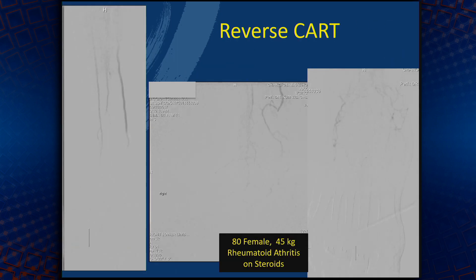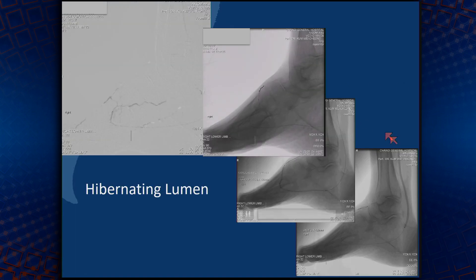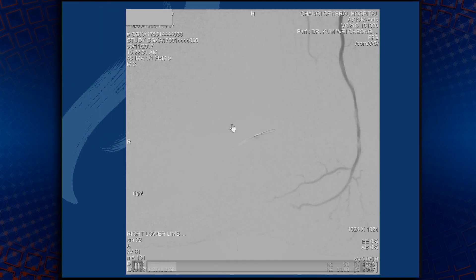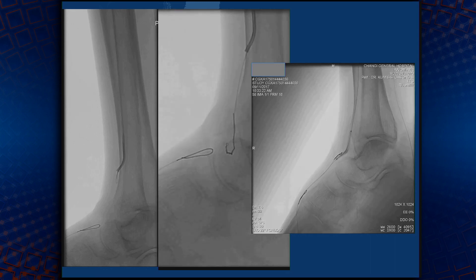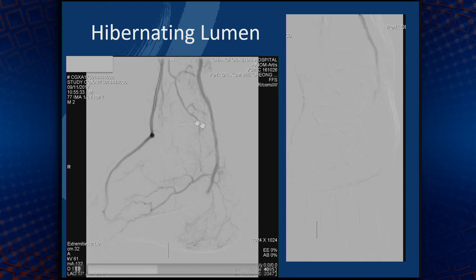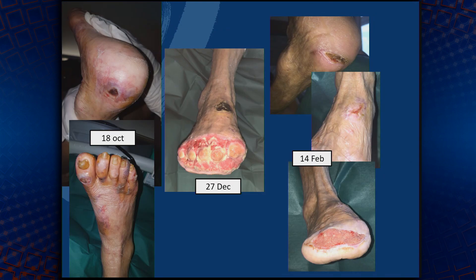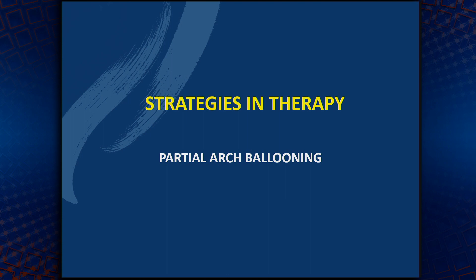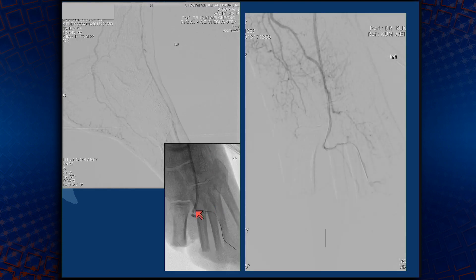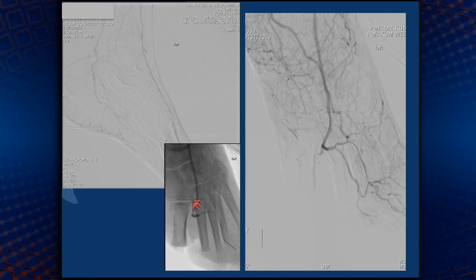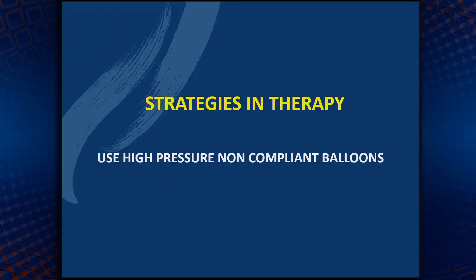We also use the reverse CART technique — with which we're able to do balloon angioplasty of the arch and achieve re-entry with the help of a balloon — and subsequently do full arch ballooning in a patient with Rutherford 6 gangrene, who subsequently healed after a transmetatarsal amputation. Because of the problems with full arch ballooning, we also do partial arch ballooning. In one case where the wound was on the first toe, partial arch ballooning achieved good blood flow without jeopardizing the rest of the arch.